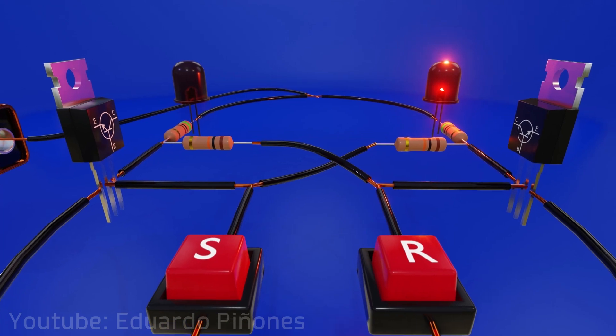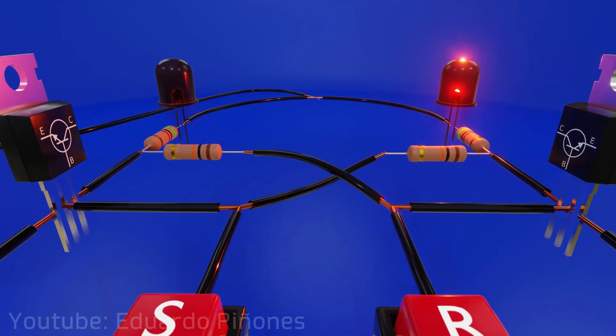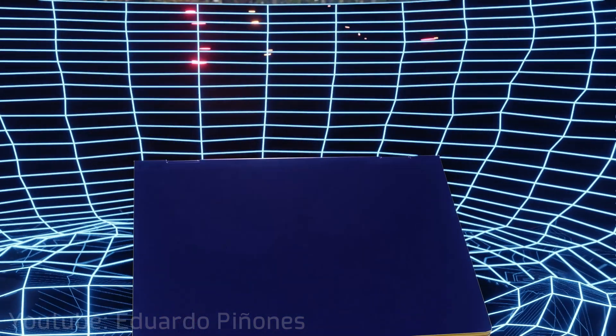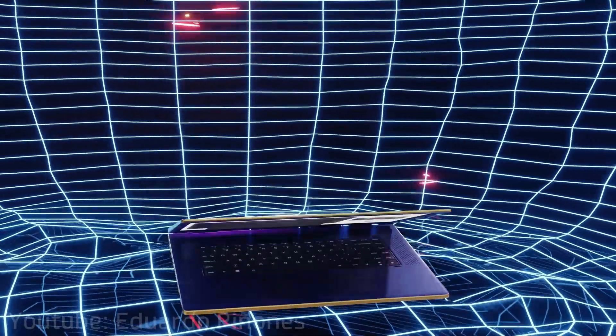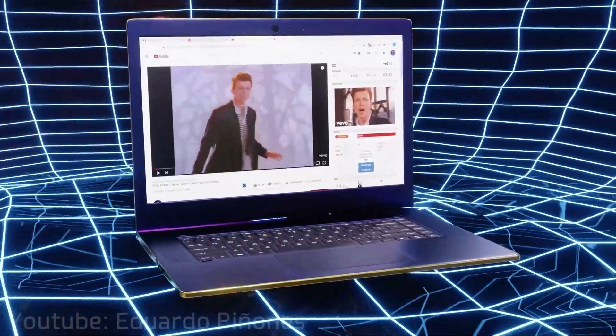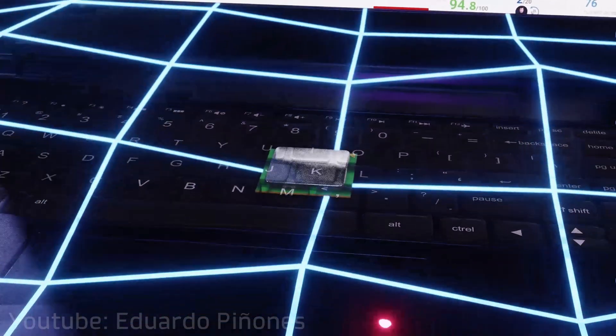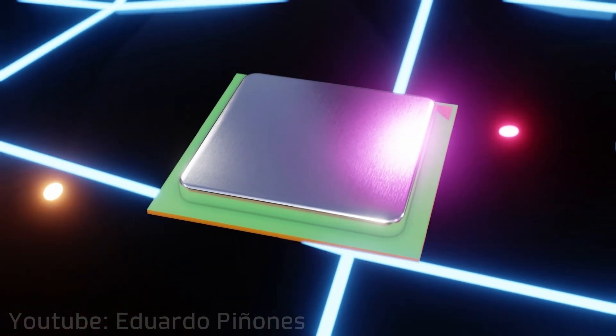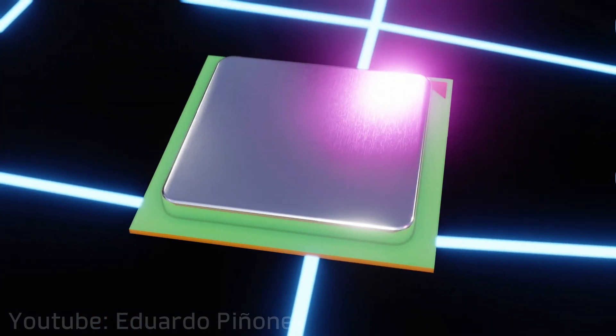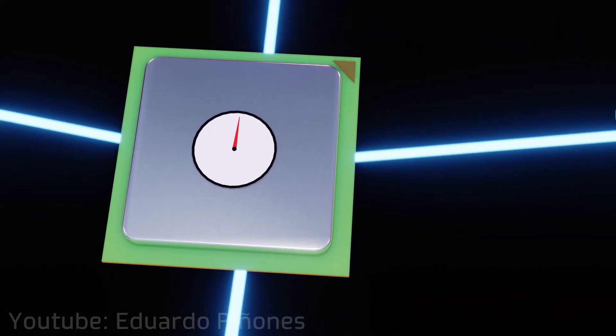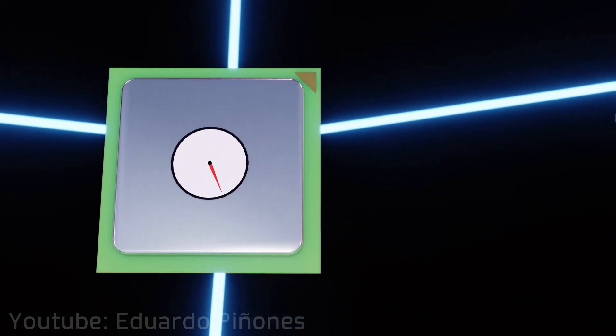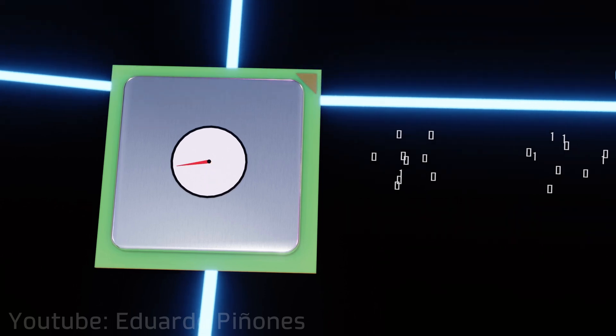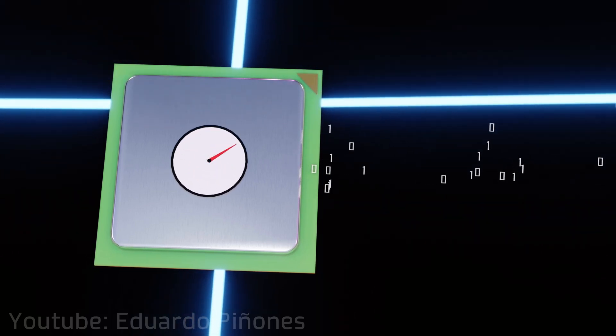While this circuit shows us at a basic level how information is stored in electronic devices, in reality these are much more complex. And although I will not go into much detail, I would like to mention two features of them. The first is that millions of them are usually used in each product, and therefore it is necessary to include a system so that they can work in a synchronized way. More specifically, the method used is a clock or control signal. This signal is connected in such a way that the circuits are only able to change their state during a certain time, and therefore, the higher the frequency of change of this clock, the more operations per second can be performed.